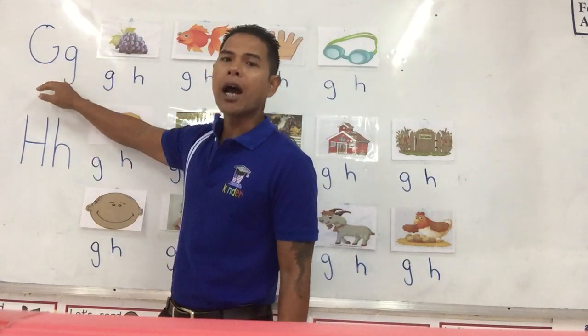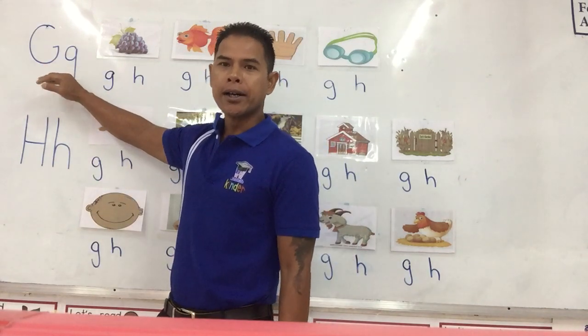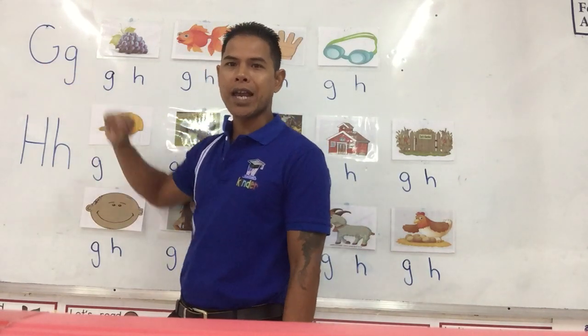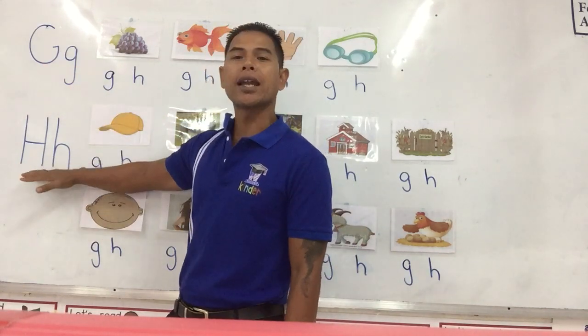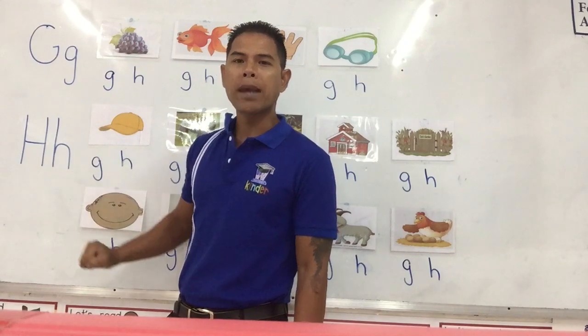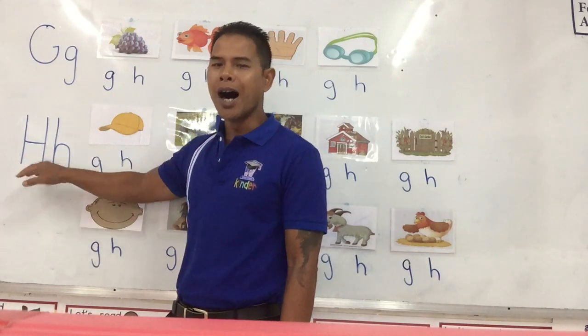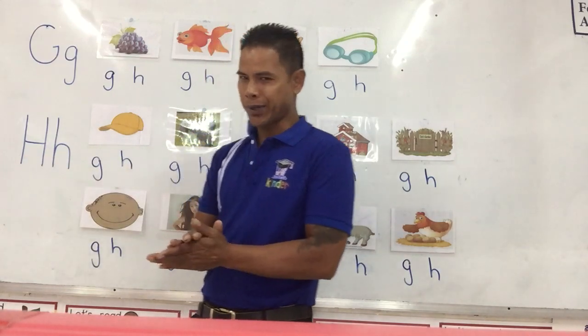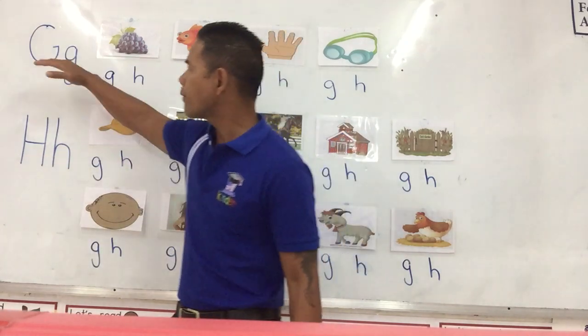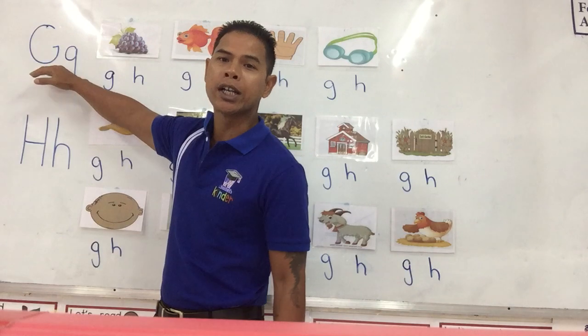Letter G makes the G sound. Letter H makes the H sound. So we have G for G, and H for H.